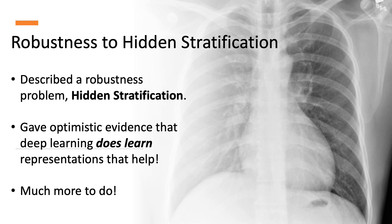In this talk, I described our work that led to the identification of hidden stratification. We were at first depressed that deep models may pick up on unintended signals, which leads to a kind of cheating. However, at the end, we saw that there is some hope. Bigger models seem to learn better representations that allow us to mitigate some of the effects of hidden stratification. I hope this is just the beginning of making these models much more robust to these accidental errors. Thank you for your time and attention.